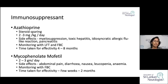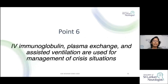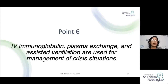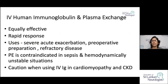Mycophenolate mofetil is another immunosuppressive agent that can be used. IV immunoglobulin, plasma exchange, and assisted ventilation are used for management of crisis situations. Both IVIG and plasma exchange give a rapid response and are equally effective. They are indicated in crisis situations — particularly for severe acute exacerbation, in the preoperative period before surgery, or for refractory disease. The choice depends on patient factors, cost, availability, and location.